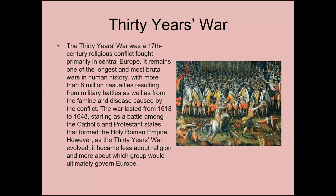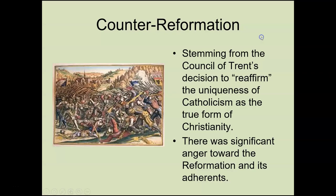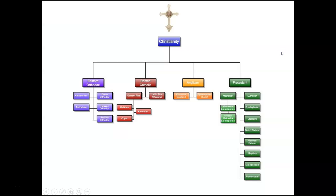It was a battle between Catholic and Protestant states within the Holy Roman Empire, and it eventually became less about religion and more about politics. The Counter-Reformation stemmed from the Council of Trent's decision to reaffirm the uniqueness of Catholicism as the only form of Christianity. Religion is a very paradoxical concept — it can probably unite people better than anything, but it can also divide people worse than anything.